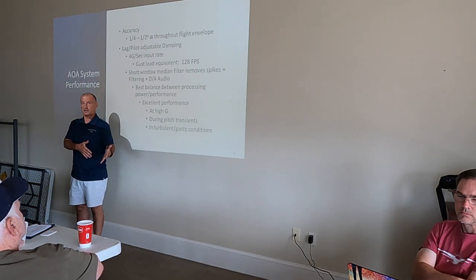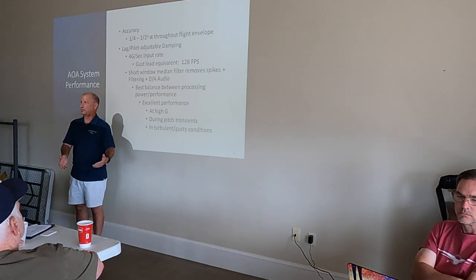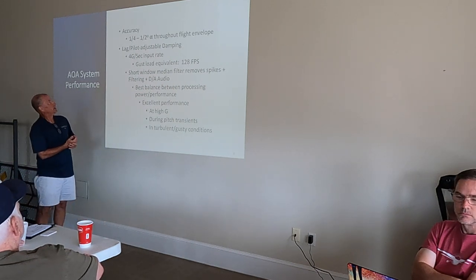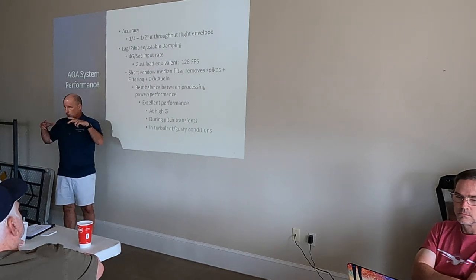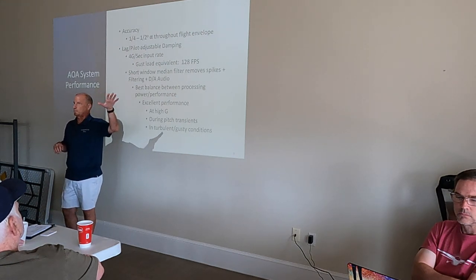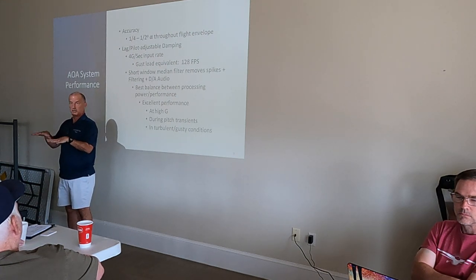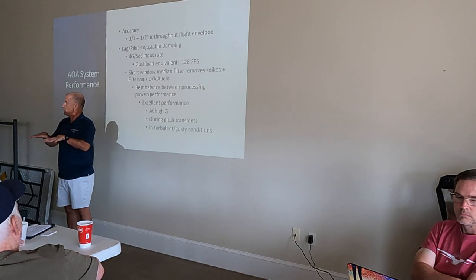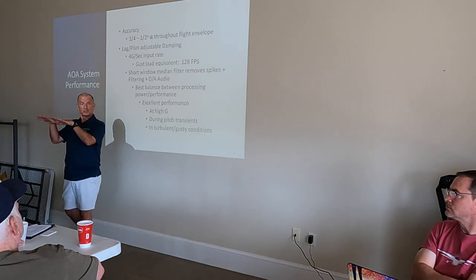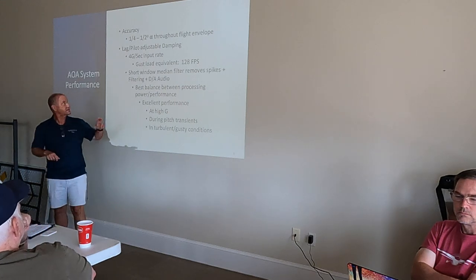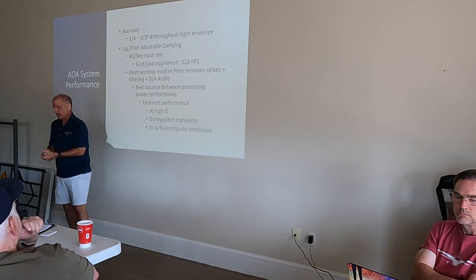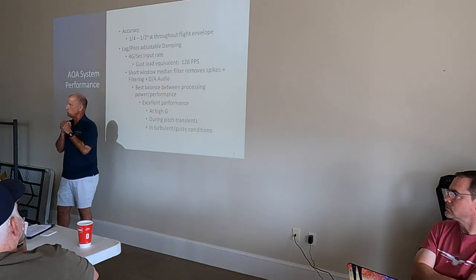If you ask Garmin or Dynon what their accuracy specification is, you're going to get a blank look — because it doesn't exist. We also test at high G's, because when you're coming into the traffic pattern on a summer afternoon with cumulonimbus everywhere, you're experiencing significant instantaneous gust loads — and we measure gust loads in G's. We test at up to four G's per second, as fast as I can pull the RV-4 without over-G'ing it, and up to six G's, which is the airplane's limit.